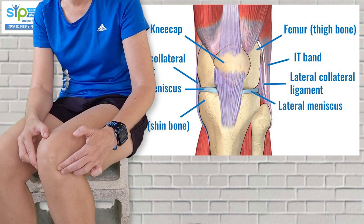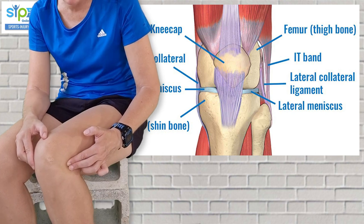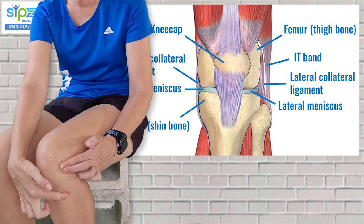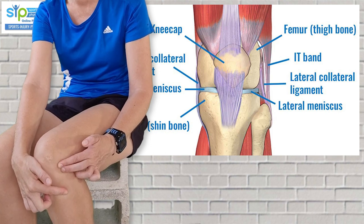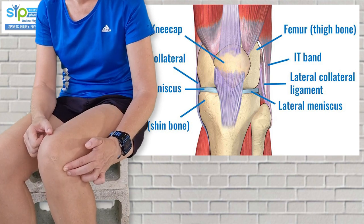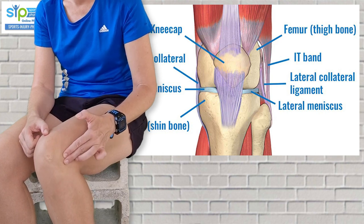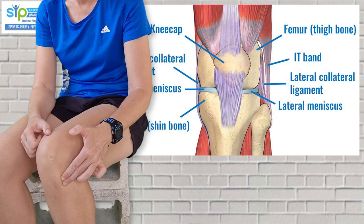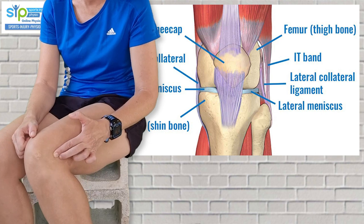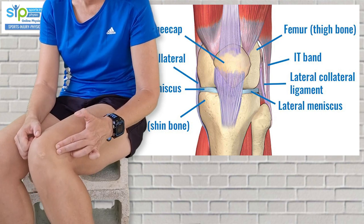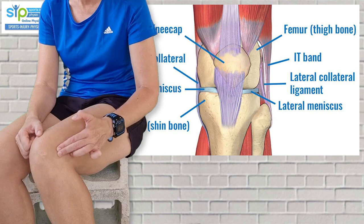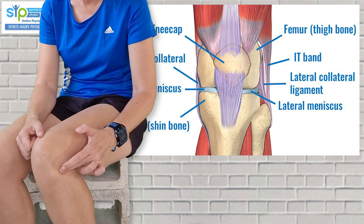If it's not painful there, it doesn't rule out a meniscus tear, but if the pain is higher up or lower down, that likely means it's not going to be a meniscus tear. Your lateral ligament runs across that joint line, so you want to find the knobbly bits on the side of your knee and feel there. If it's an LCL tear, you will find pain on that ligament.